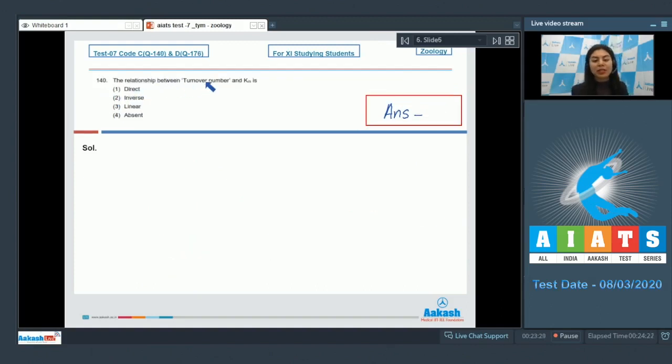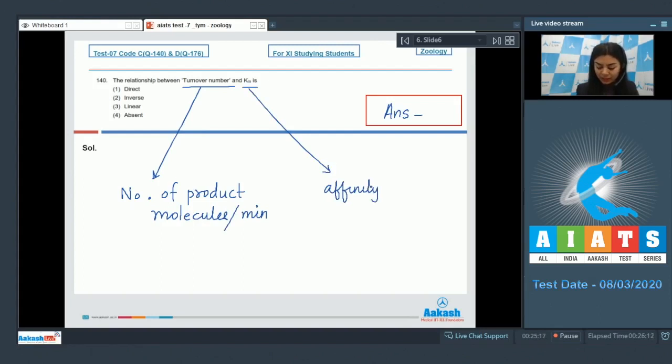Question 140: The relationship between turnover number and Km is: direct, inverse, linear, absent. Turnover number means the number of product molecules that are formed per minute, whereas Km represents the affinity of substrate for the enzyme.